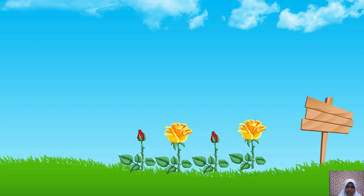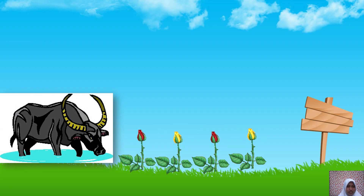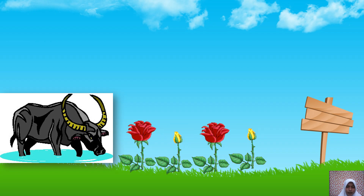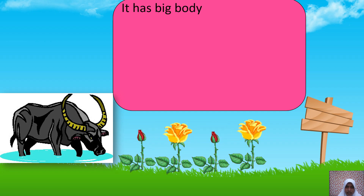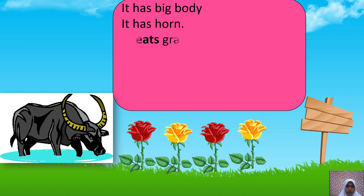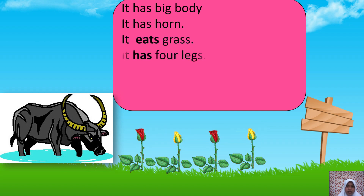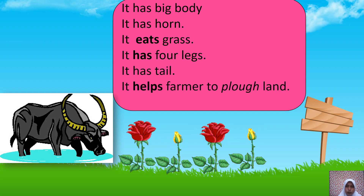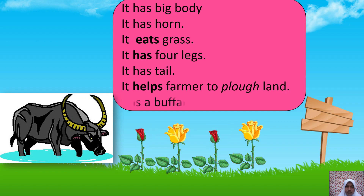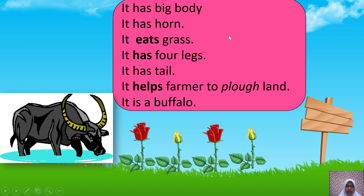As usual, please pay attention to my explanation and don't forget to repeat my pronunciation. What animal is in the picture? It is buffalo. Please repeat after me: it has a big body, it has horns, it grazes, it has four legs, it has a tail, it helps the farmer to crop the land. It is buffalo.